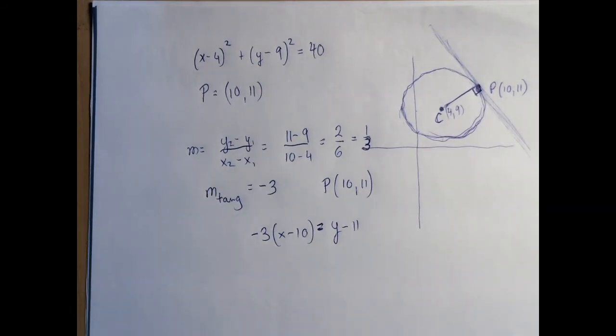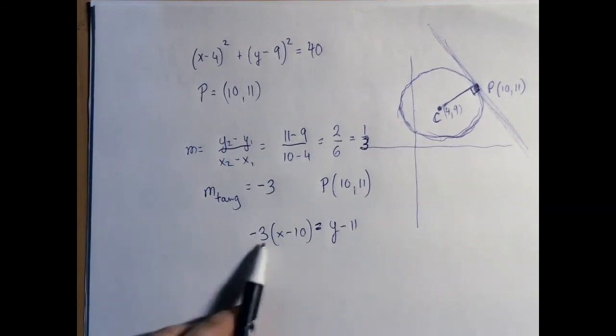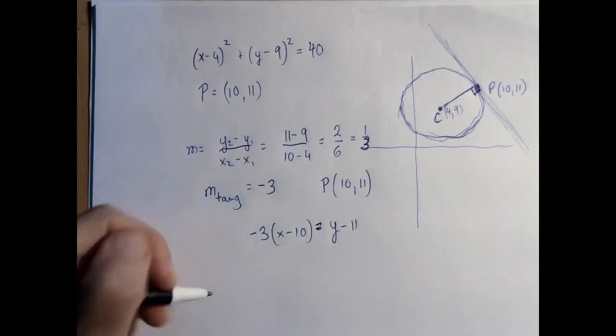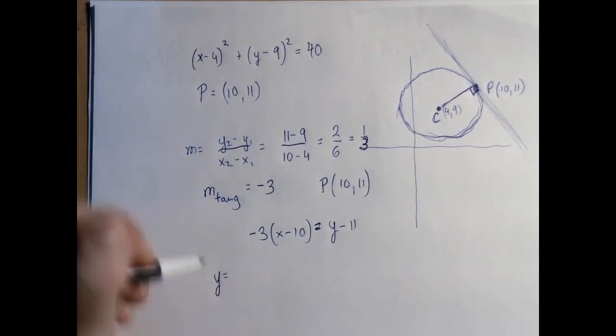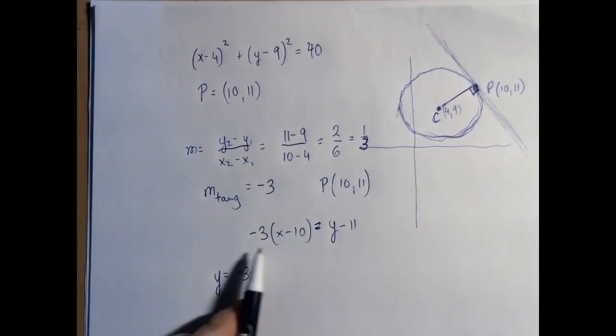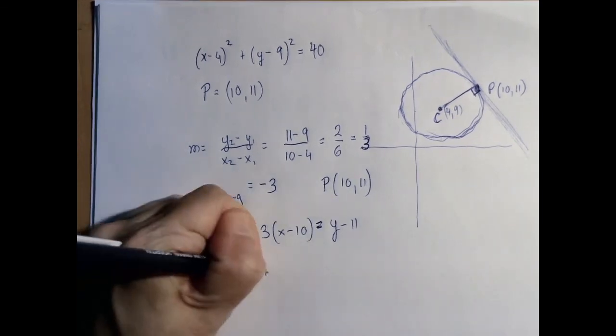And if you want to get the slope intercept form, we're just going to distribute the negative 3 and add the 11. So we're going to get y equals negative 3x plus 30 plus 11 plus 41.